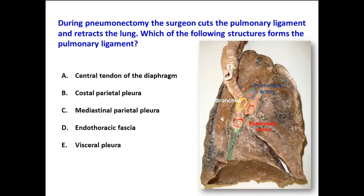The function of the pulmonary ligament is that it will provide a dead space for the root of the lung to descend during deep inspiration, and at the same time it provides a dead space for the pulmonary veins, which are located close to it, to descend during periods of increased blood flow.